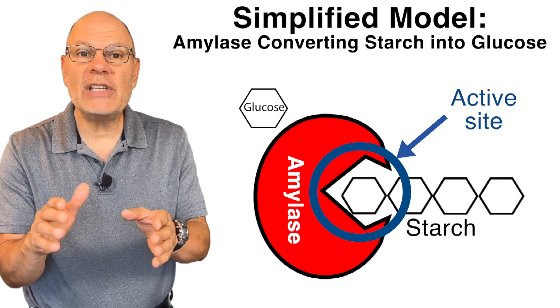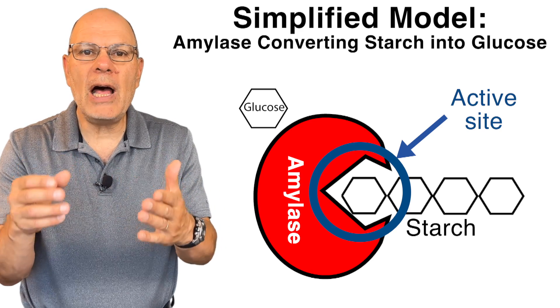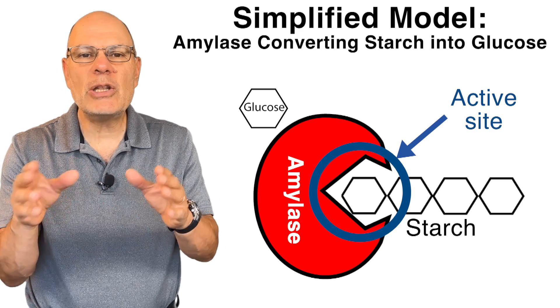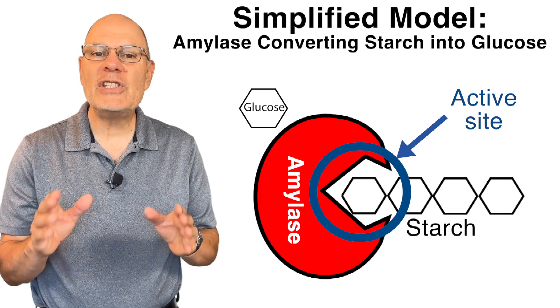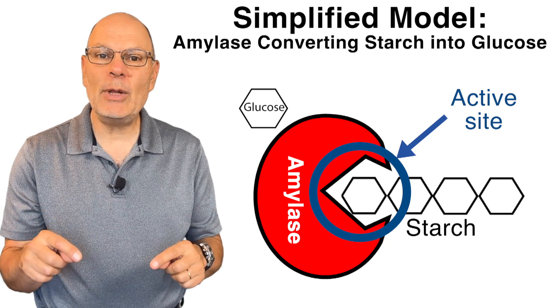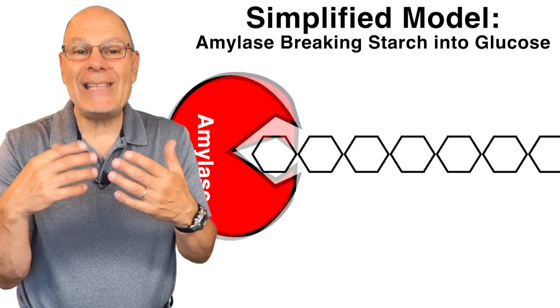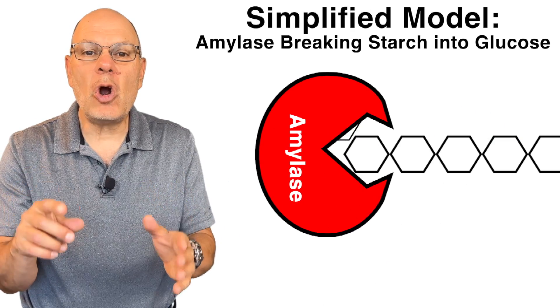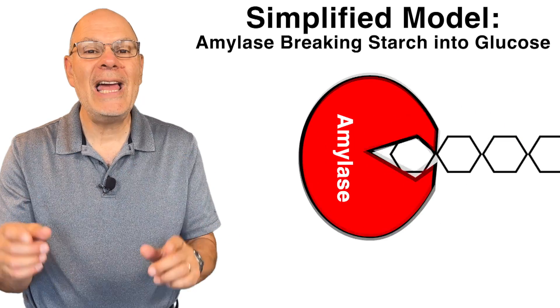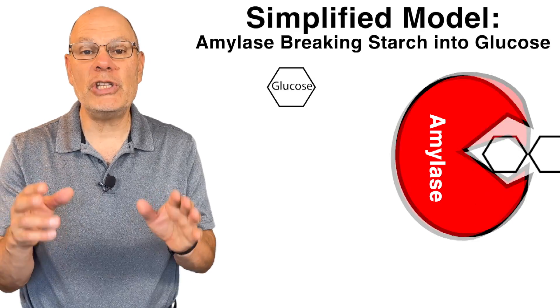Amylase has an active site that can break the bonds in starch that connect the glucose monomers together. Remember, I'm simplifying the interaction between amylase and starch a little bit. As amylase does its work, the starch, which is the substrate, gets converted into glucose, which is the product.